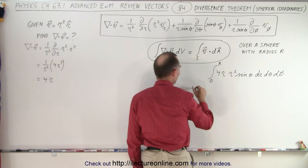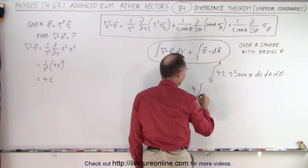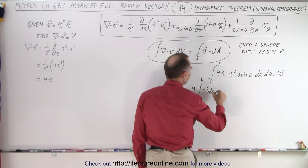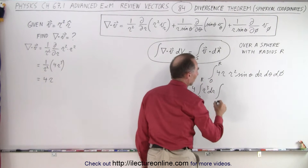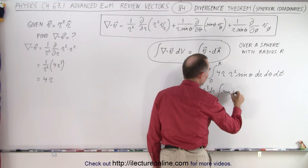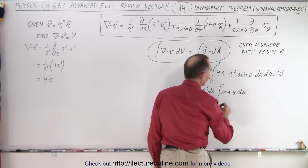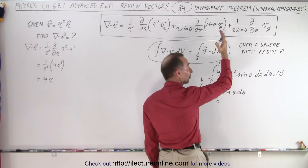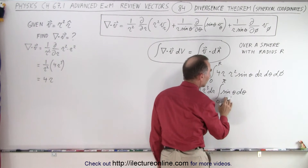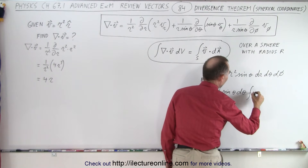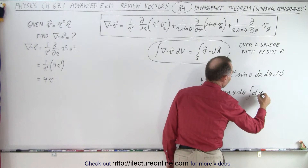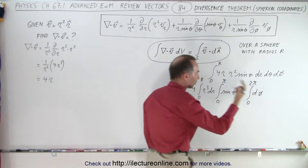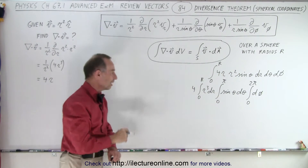So we can write this as 4 times the integral from 0 to r of r cubed dr, times the integral of sine theta dθ from 0 to π — because it goes from the z-axis to the negative z-axis, 180 degrees — times the integral of dφ from 0 to 2π, because we go all the way around in the φ direction.